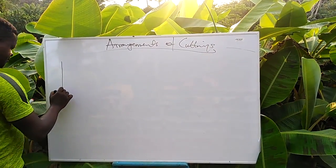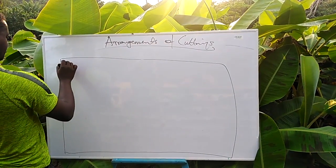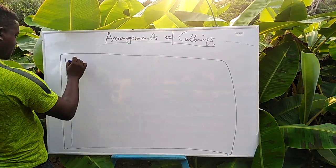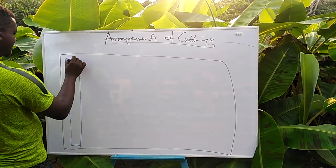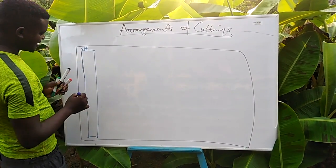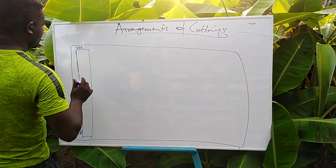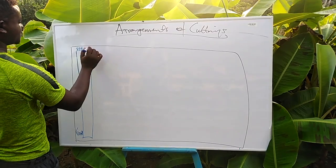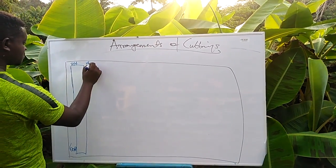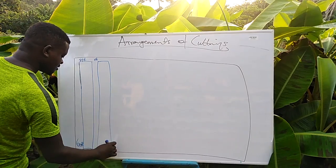Let's assume this is our field. As we can see, we have our beds here, aligned nicely as we've been doing. From here to here is 60, so these are our beds, and in between we have one pathway just to allow the movement of materials and our irrigation lines. This is a simple field setup.